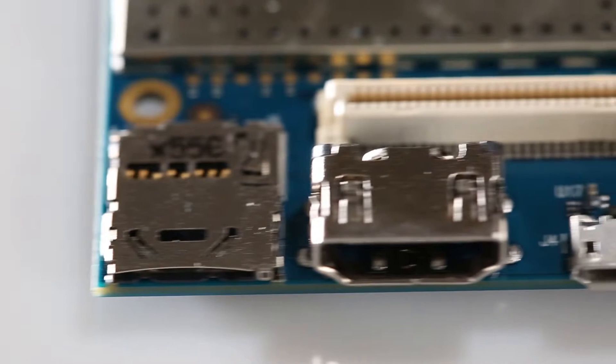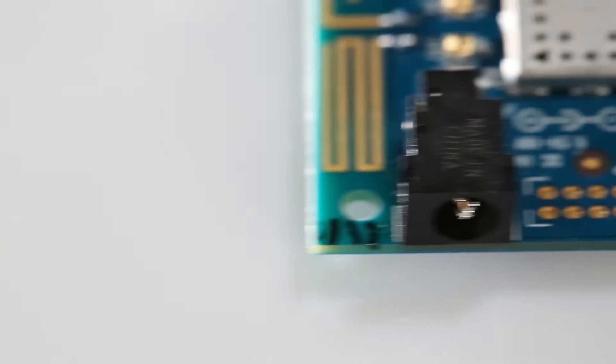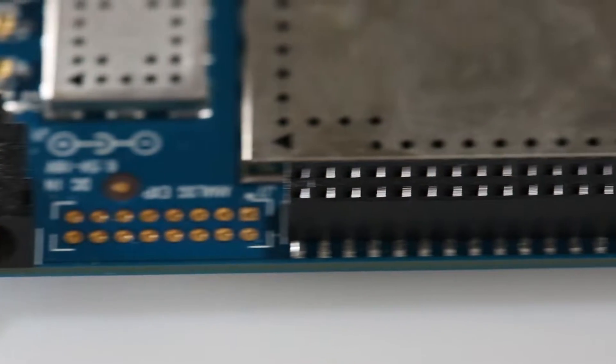The boards may all look different, but the interfaces are all in the exact same place on every compliant board. This means that the hardware developed for one board can be used with any of the boards. This makes it very appealing to everyone from makers sharing ideas to OEMs that want to ensure all products are cross-compatible.